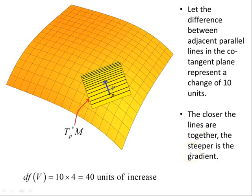Let the difference between adjacent parallel lines in a cotangent plane represent a change of 10 units. So between two adjacent lines, you have one contour and that represents 10 units of anything - height, whatever you want. Now, the closer the lines are together, the steeper is the gradient. On this particular surface, it's flatter towards the lower part here and steeper as we go up around the edge here. Here's the cotangent space at point p, and here's our vector V at this point.